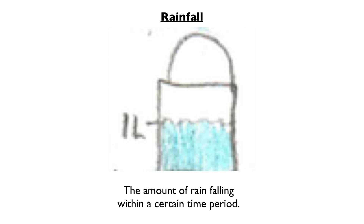Rainfall. This is the amount of rain falling in a certain time period. It is collected in rain gauges and can be displayed in graphs to show how much rain has fallen.